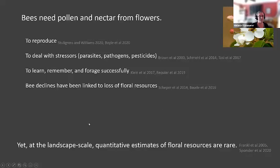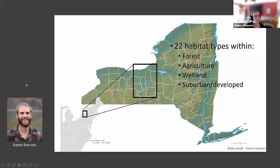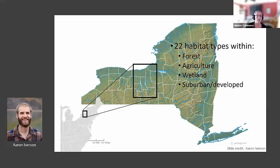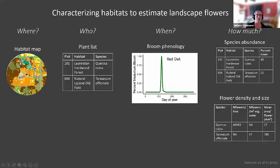Bees need flowers — I'm not going to belabor this slide. But there are surprisingly few papers and publications that look at landscape-scale availability of floral resources, so that was my focus for this project. This really builds on work by my colleague and co-author Aaron Iverson, who did a pretty extensive plant survey of the Finger Lakes region of New York. He looked at 144 sites of 22 different habitat types and developed a framework of the pieces of information we would need to estimate landscape flowering.